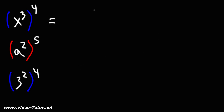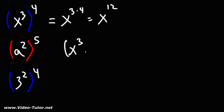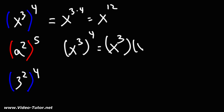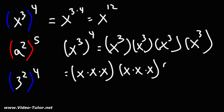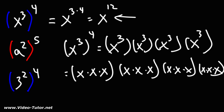So x cubed raised to the fourth power is x raised to the three times four. Three times four is 12. But let's talk about what this means. x cubed to the fourth power means that we have four x cubes, and each x cube represents three x variables multiplied to each other. So in total, we have 12 x variables multiplied to each other.